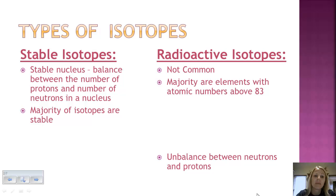We said there are two types. We have stable isotopes and radioactive isotopes. The stable isotopes are those that have a balance between the number of protons and the number of neutrons found in a nucleus, and they're more common.